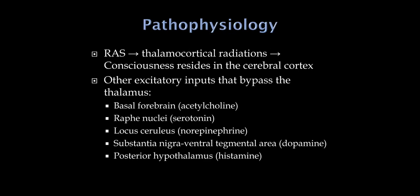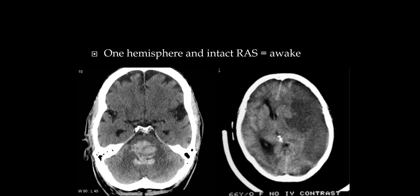The big picture is that there are many areas in the lower brain and brainstem that are activating for the cortex. The more of these that are knocked out, the more likely the patient is to be confused or even in a coma. To be awake, you need one hemisphere working and an intact reticular activating system. A large pontine hemorrhage, for example, knocks out enough of the RAS to put the patient in a coma.